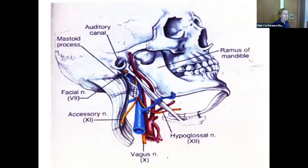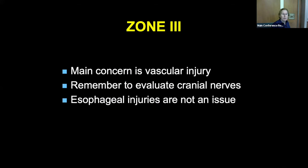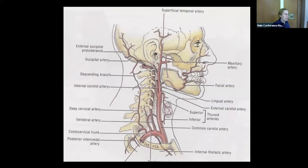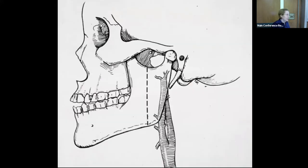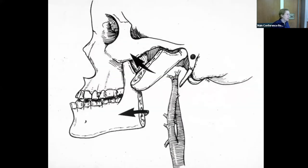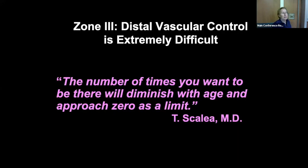Zone three — you're up in the head. You're not as worried about the esophagus or the airway, but you have major vessels and potential for neurologic injury. Remember to do a good cranial nerve evaluation. For surgeons, to get in there operatively, they basically have to disarticulate the mandible, cut it, and swing it up. As our first chairman Tom Scalea said, the number of times you want to be there diminishes with age and approaches zero as a limit.